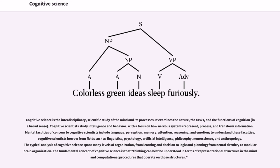Cognitive science is the interdisciplinary, scientific study of the mind and its processes. It examines the nature, the tasks, and the functions of cognition in a broad sense. Cognitive scientists study intelligence and behavior, with a focus on how nervous systems represent, process, and transform information.